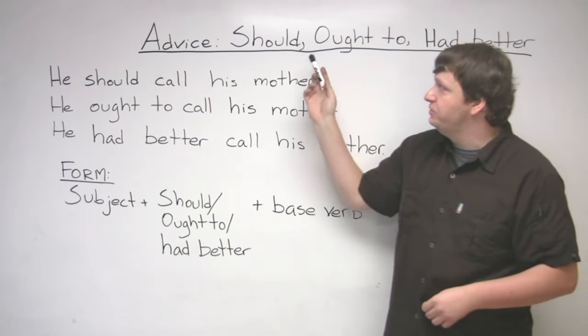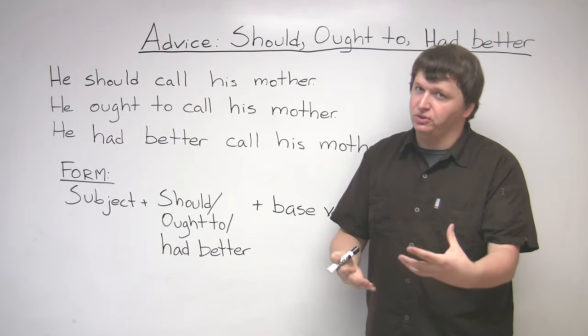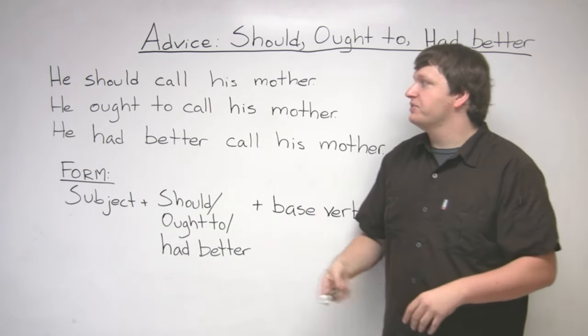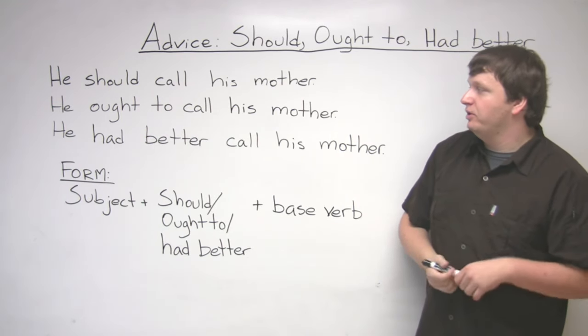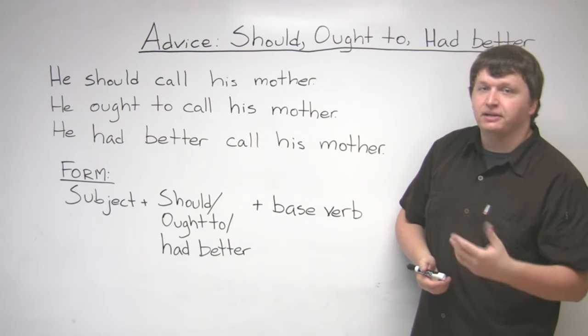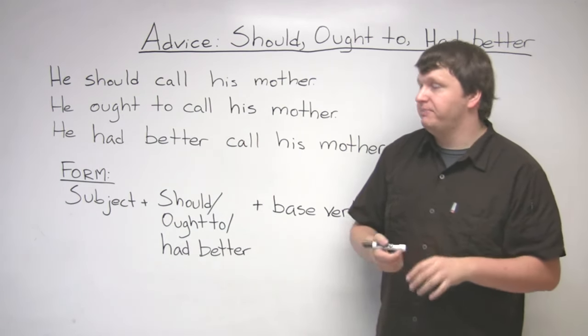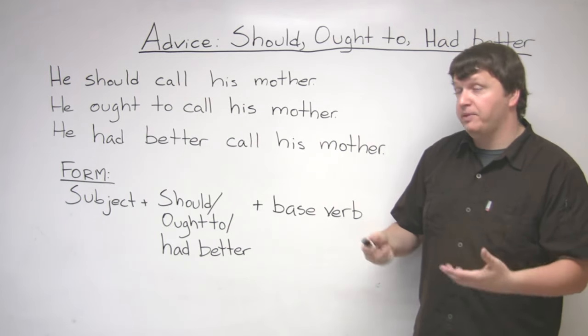We use should and ought to when we're trying to say something is advisable to do. So for example, I have three sentences, all having the same kind of end goal, but the effect is different depending on if you use should, ought to, or had better.